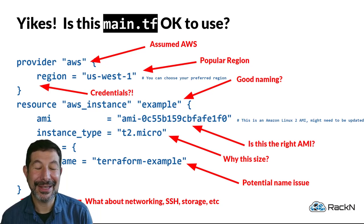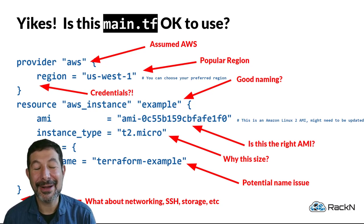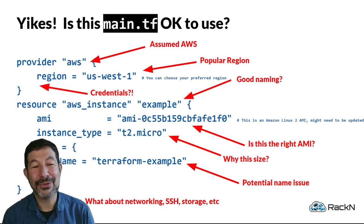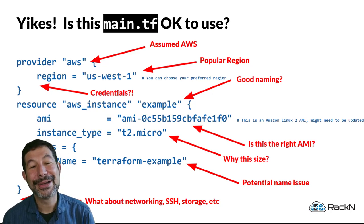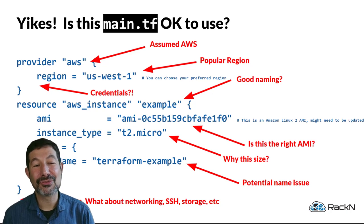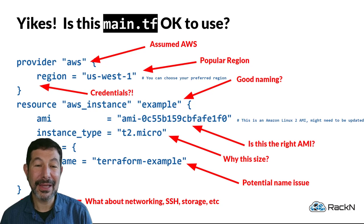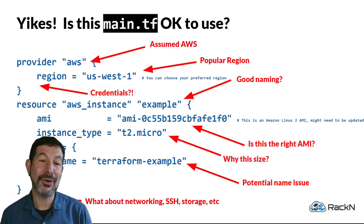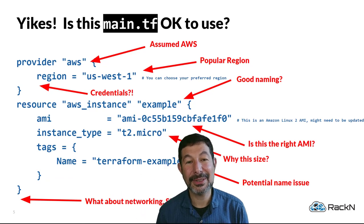US West 1 is a very busy region and might not make sense for where you're geographically located. Naming conventions, the AMIs — those are region-specific. Is that right for this region? Why is this instance size chosen? Just problematic right from the start. It looks legitimate — you could think, it gave me something usable. But a lot of questions arise out of even the most basic generated information from ChatGPT.